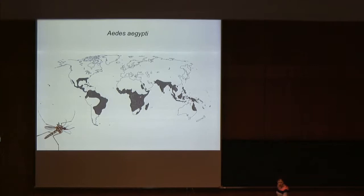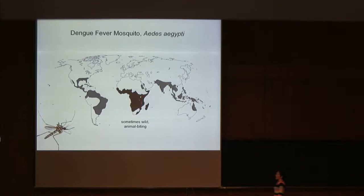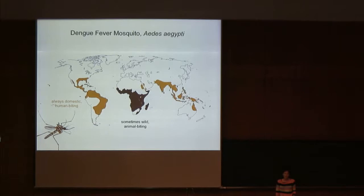Aedes aegypti is distributed throughout the subtropics and tropics but almost certainly originated as a wild species in forested areas of sub-Saharan Africa. Today in sub-Saharan Africa you can still find populations that live in the forest, away from humans, and bite non-human animals. Outside of Africa the story is very different — those populations are strictly specialized on living with and biting humans, probably descending from a single population that evolved to specialize within the past 10,000 years, then spread around the world with our help.